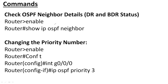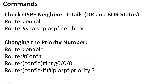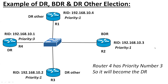To check the neighbor status for DR and BDR, use the command 'show ip ospf neighbor' — it will show complete information about neighbors. To change the priority number, go to enable mode, then global configuration mode, select the interface connected to the switch, and use the command 'ip ospf priority' followed by a number greater than 1. That router will automatically become the DR.